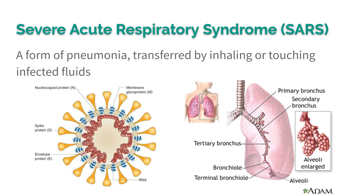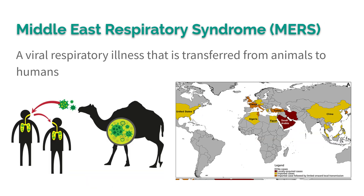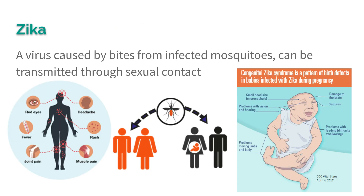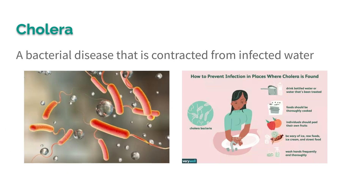Severe acute respiratory syndrome, or SARS, is a form of pneumonia transferred by inhaling or touching infected fluids. Middle Eastern respiratory syndrome, or MERS, is a viral respiratory illness that can be transferred from animals to humans. Zika is a virus caused by bites from infected mosquitoes, as well as sexual contact. A major concern with Zika is that it can cause birth defects in babies if a pregnant woman contracts the virus.